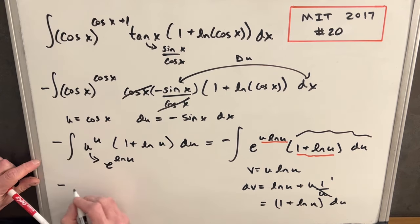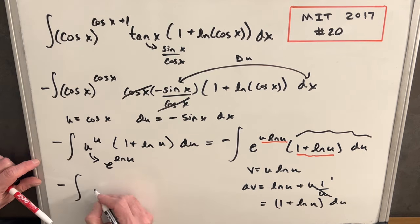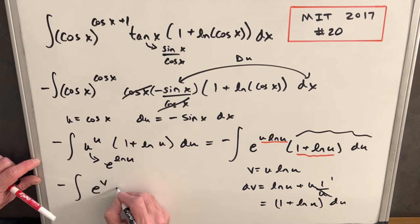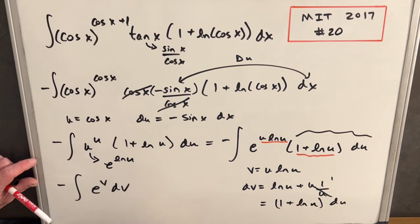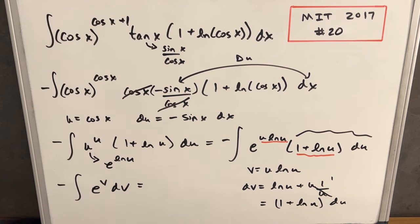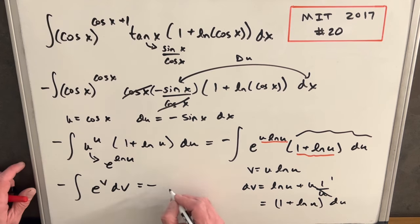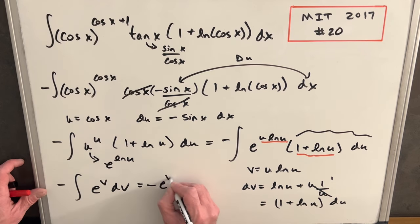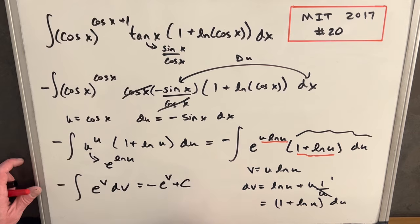Making that substitution, all we're left with is just e to the v dv. And like I said at the beginning, with a few steps we come to a very simple integral. Integrating this, we just get negative e to the v plus c.